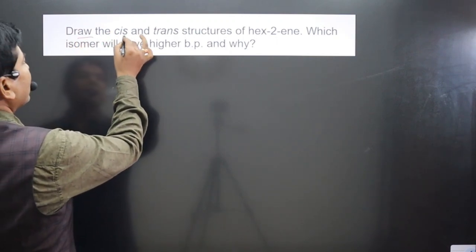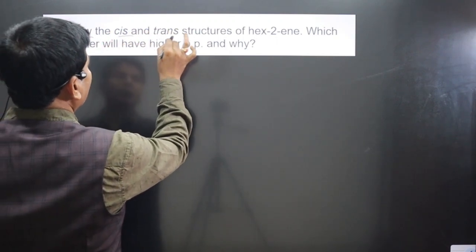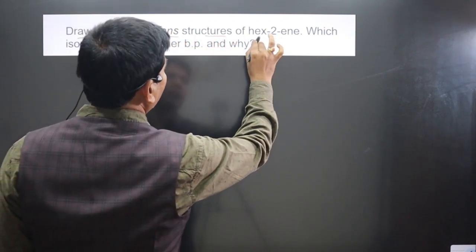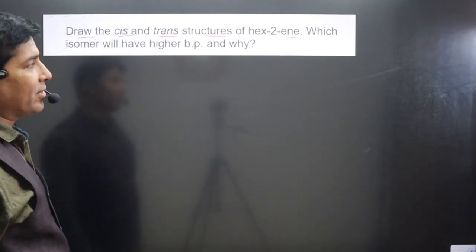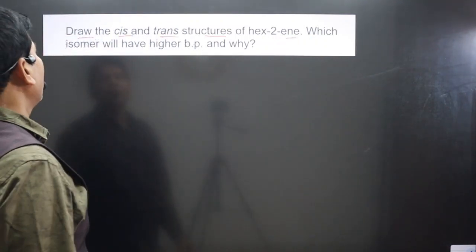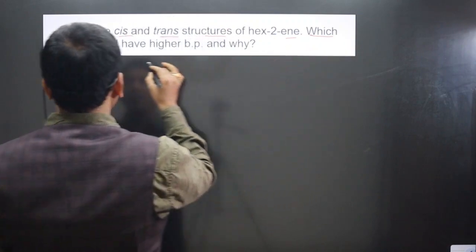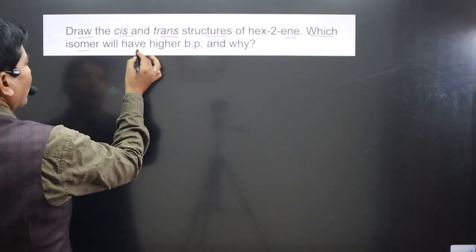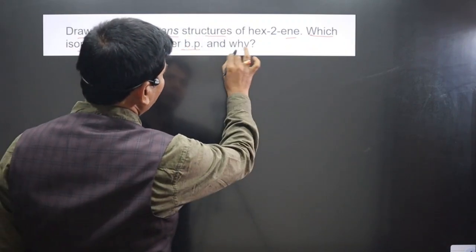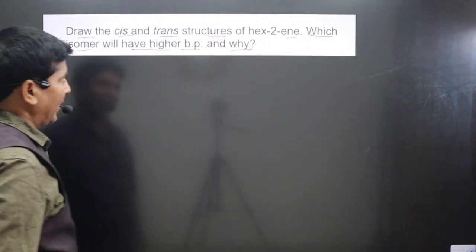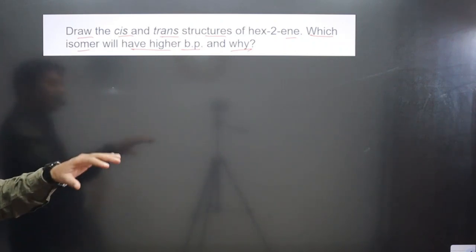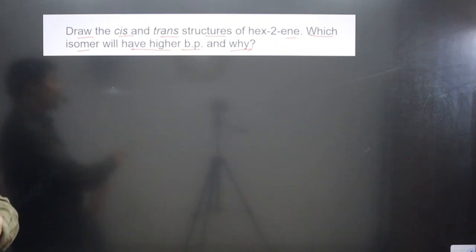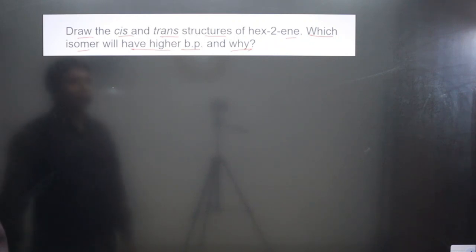The question asks us to draw the cis and trans structures of hex-2-ene. It further asks which isomer will have a higher boiling point and why. Cis and trans are geometrical isomers — we will draw the structures and then identify which has the higher boiling point.